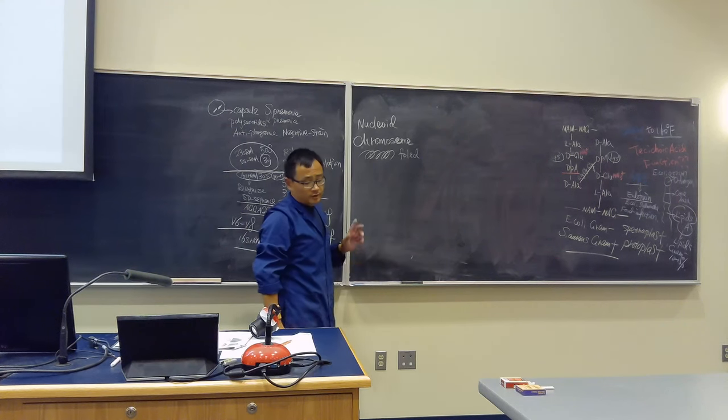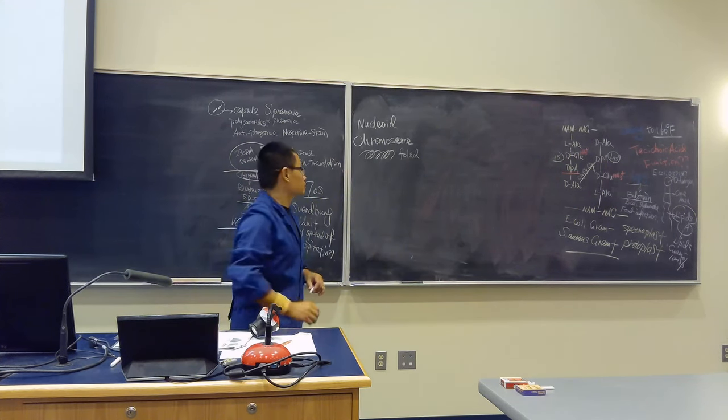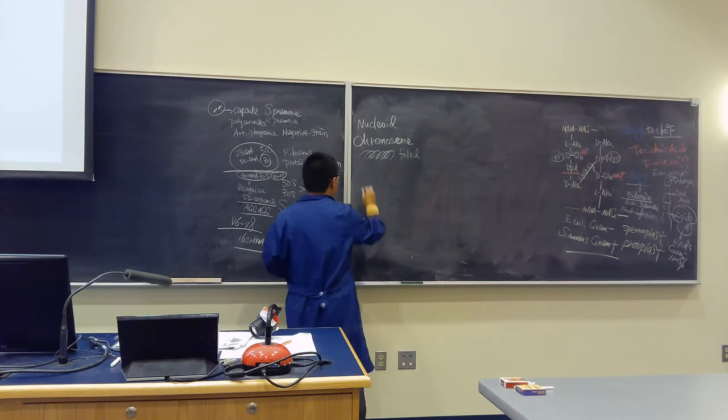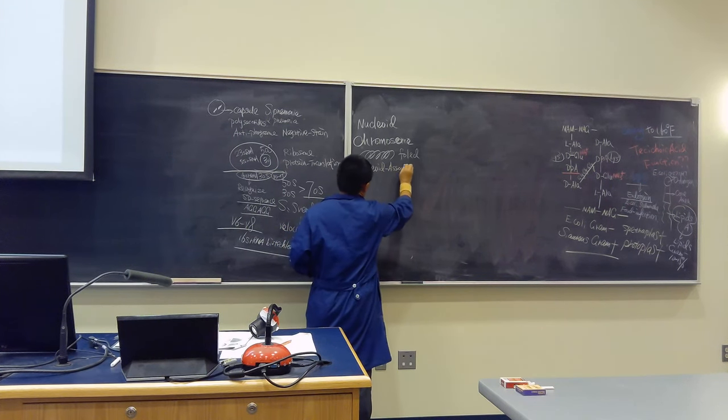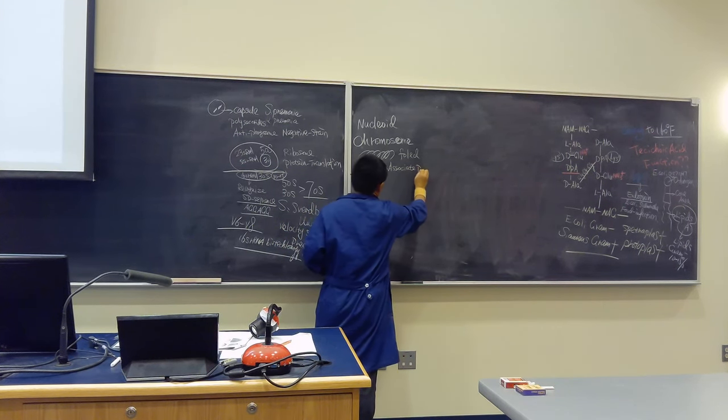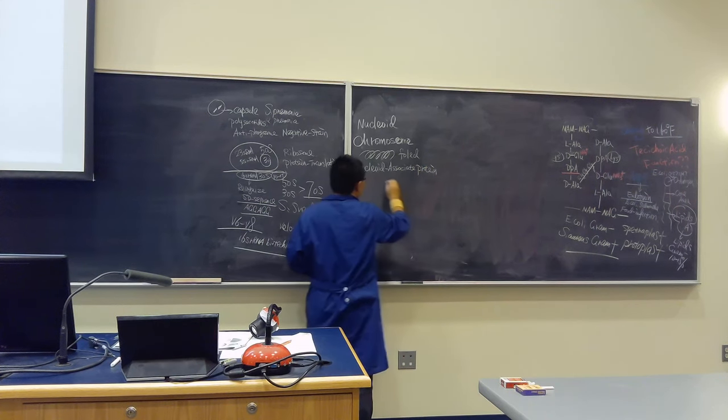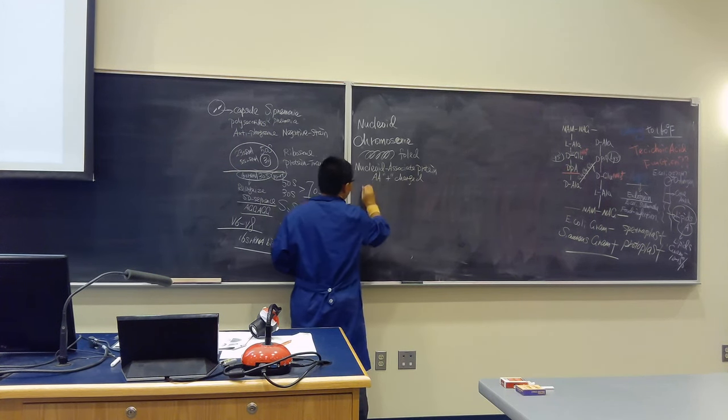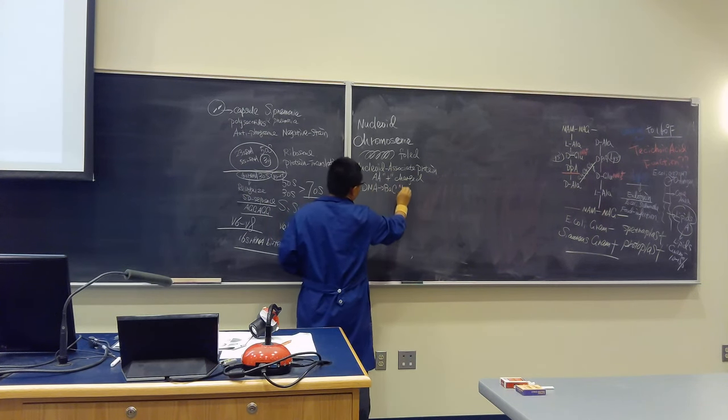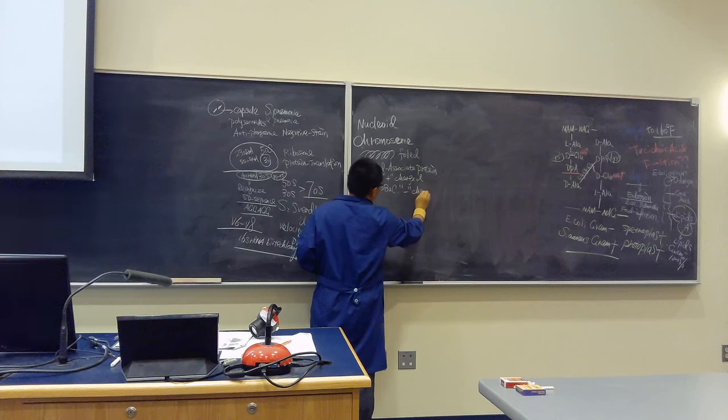Because in the chromosome, there are nucleoid-associated proteins. Those proteins, the amino acids, are positively charged. And the DNA sequence of bacteria is actually mostly negatively charged. You know that. So they form a complex.